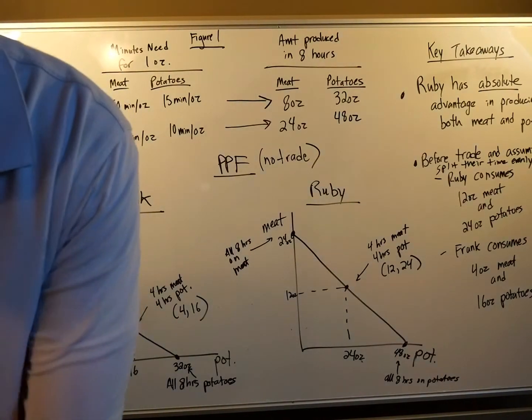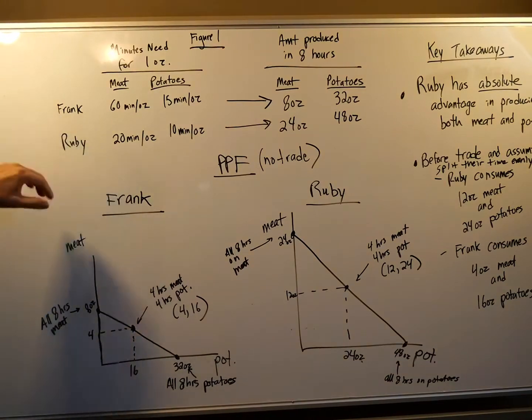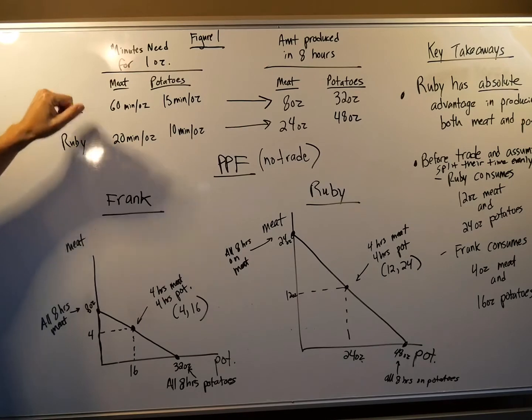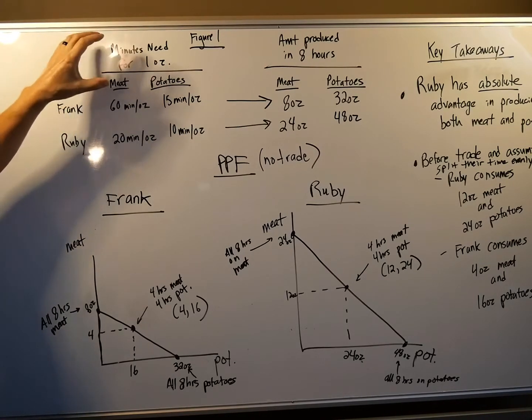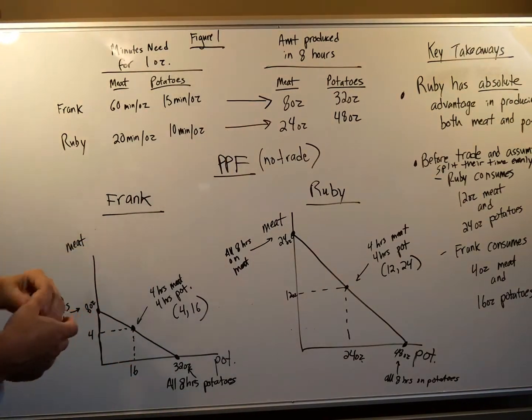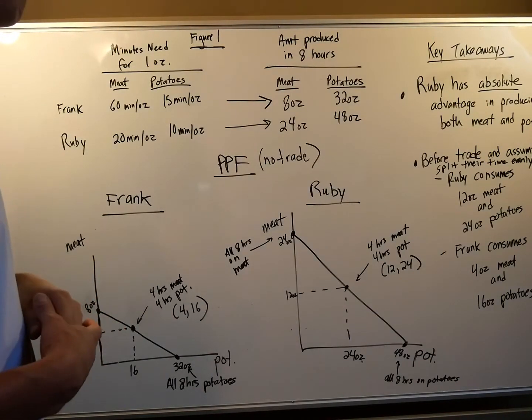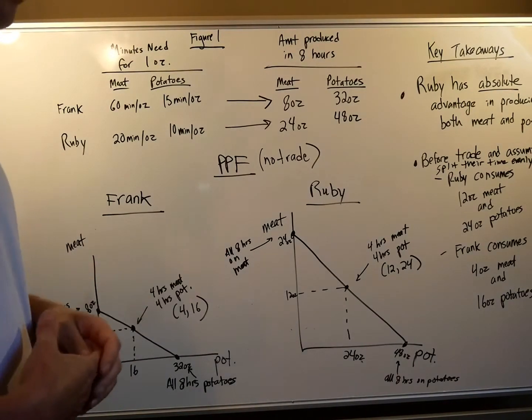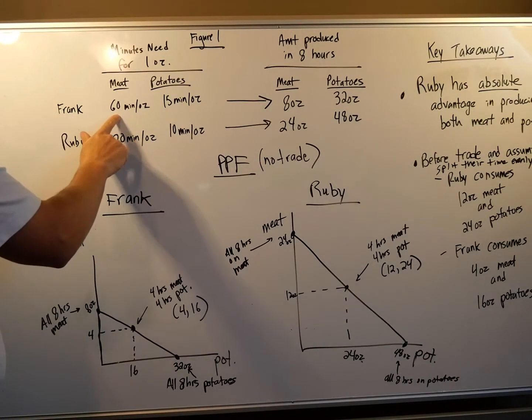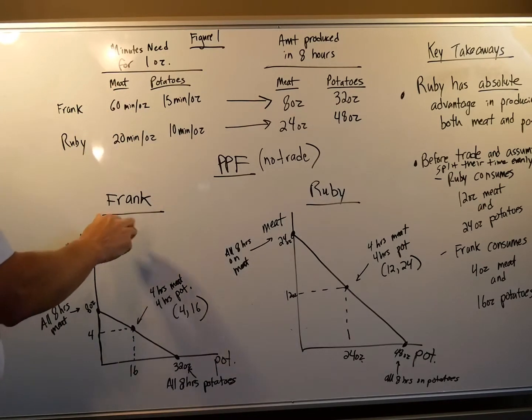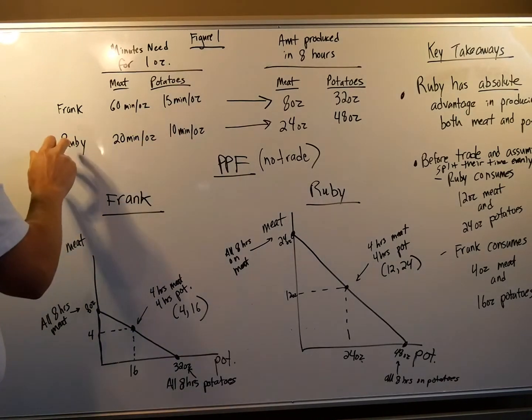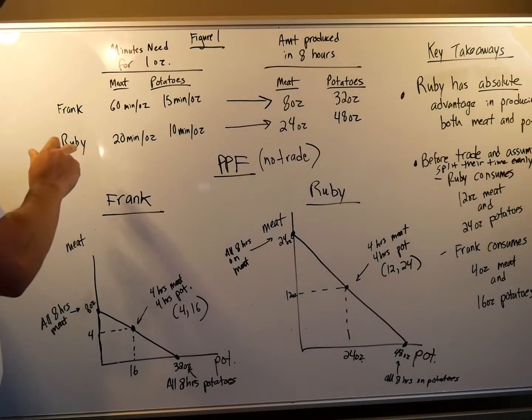So they're producing two things, meat and potatoes. And we start with their minutes needed to make one ounce because ounces of meat and potatoes is their compensation package. Let's start with Frank. It takes him 60 minutes to make one ounce of meat. It takes him 15 minutes to make one ounce of potatoes.